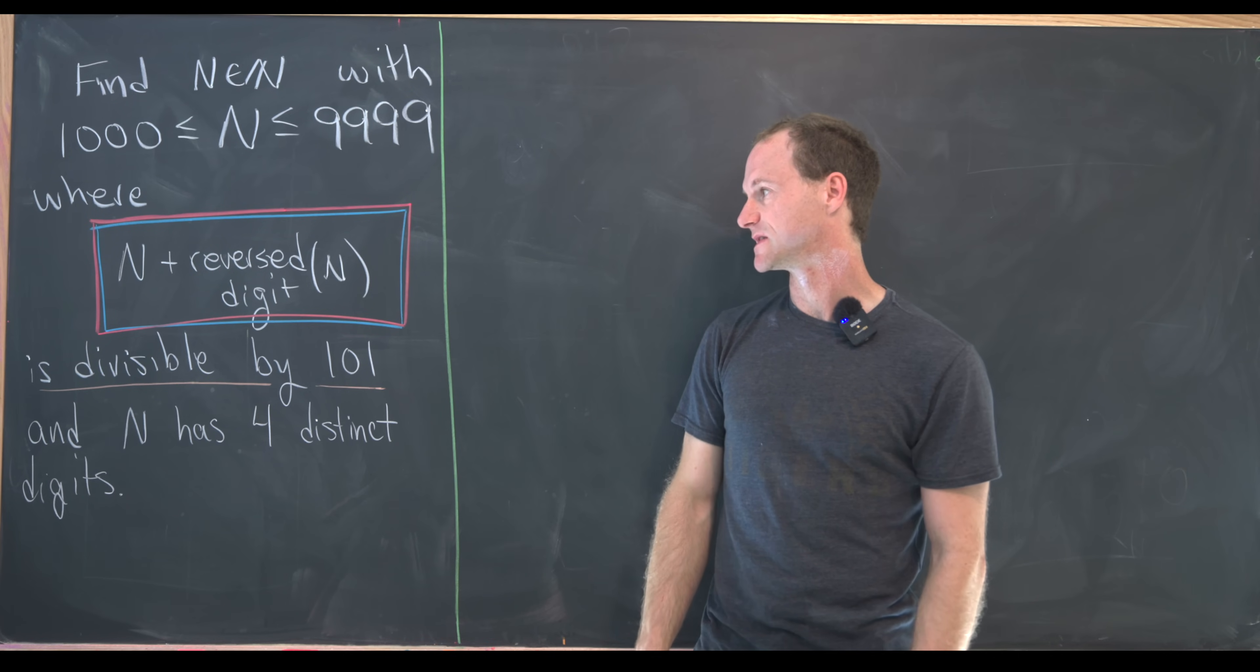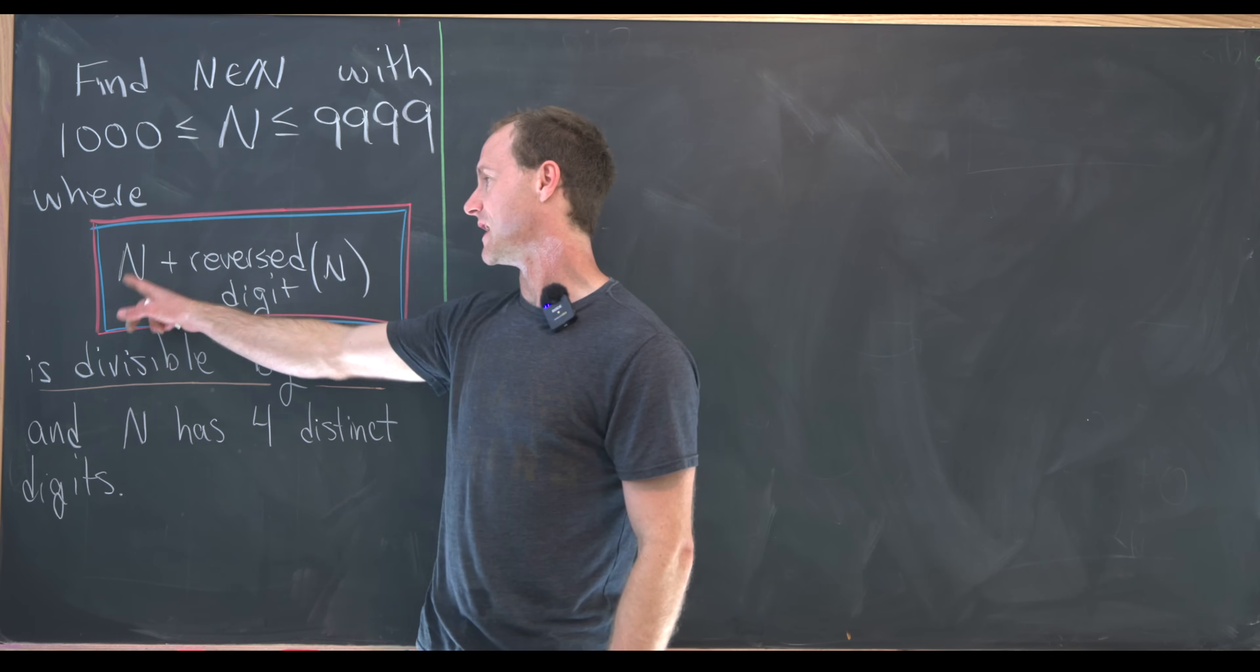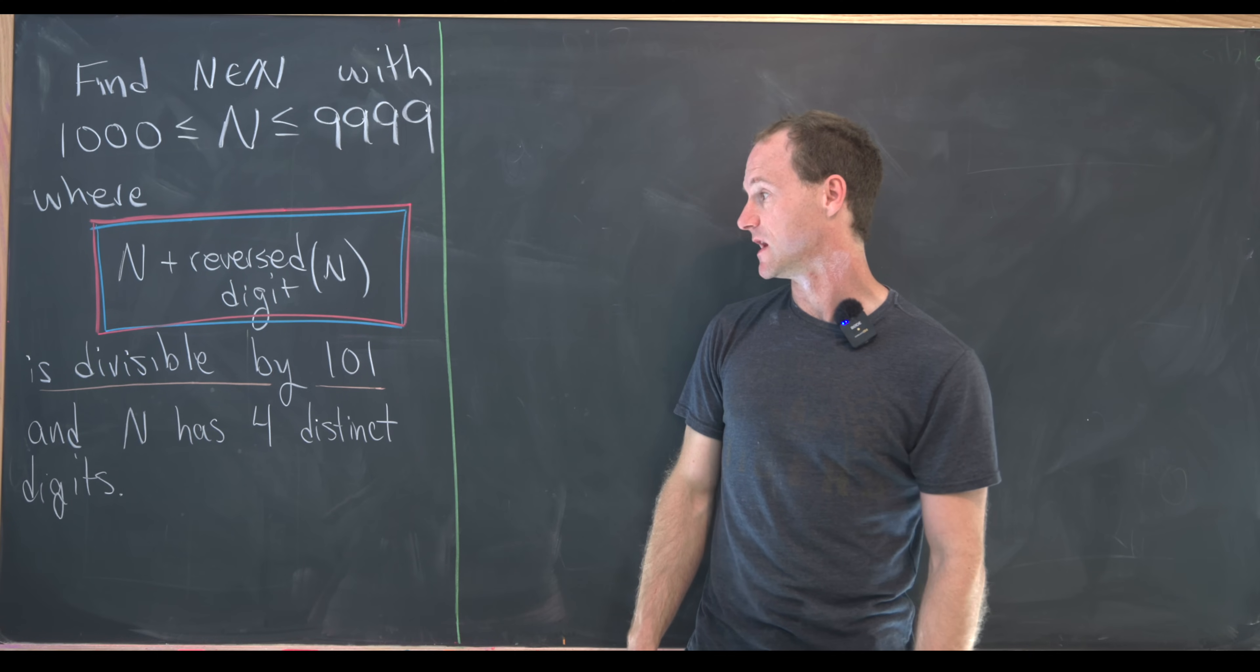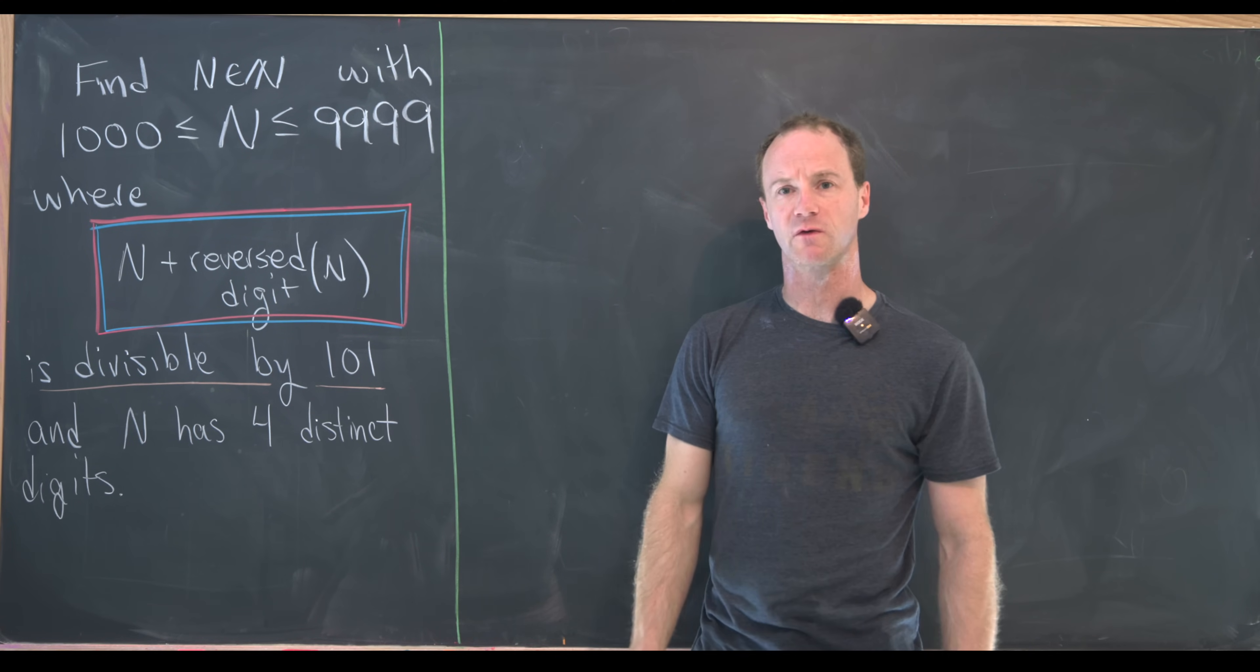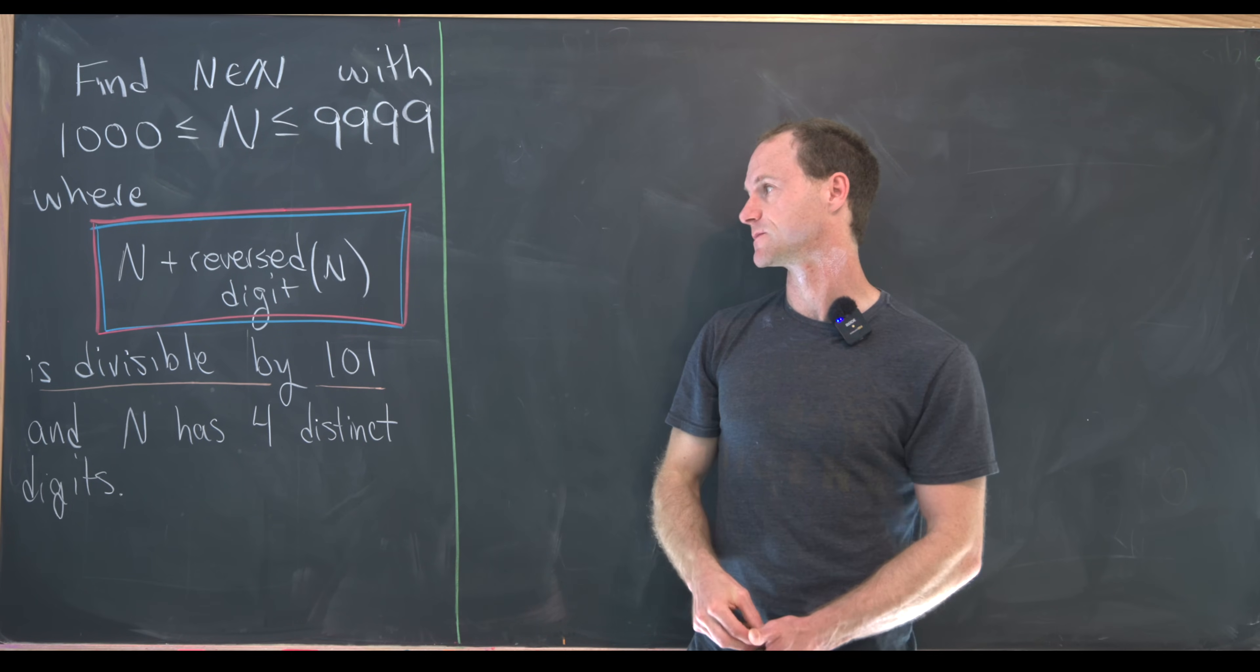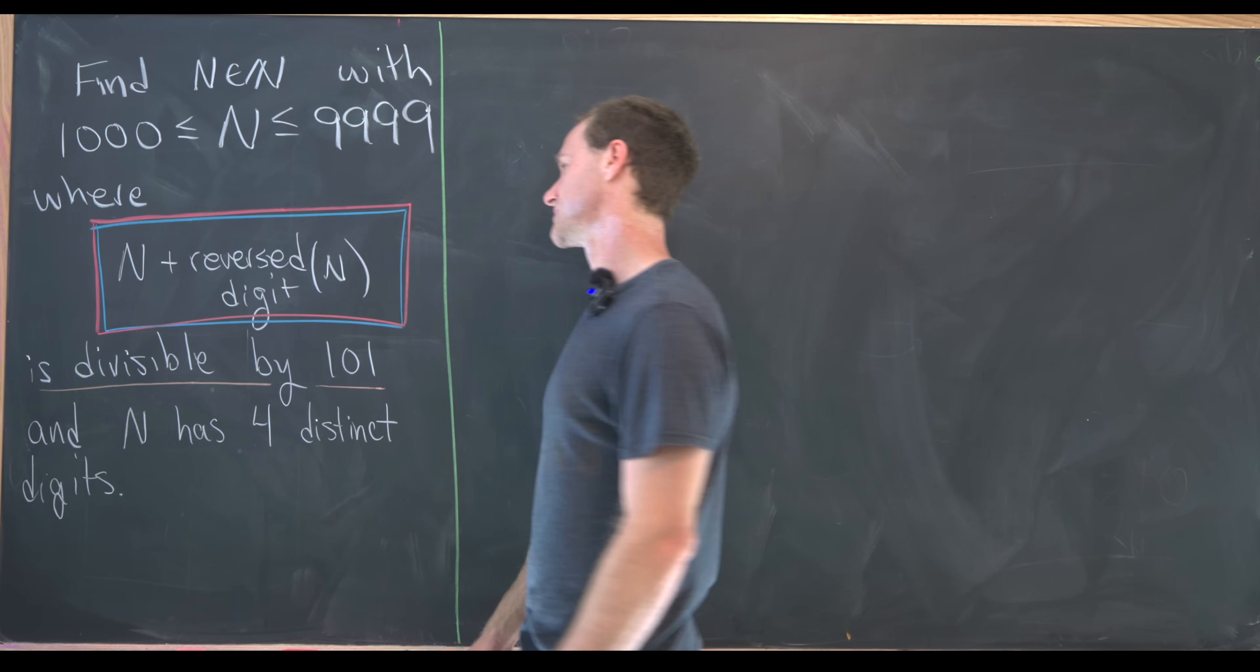The second condition that it must satisfy is that N plus the reversed digit version of N is divisible by 101. So what I mean by the reversed digit, that means I just take the digits and write them in reverse. Let's see maybe how we can do this.